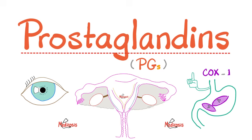In previous videos, I helped you learn about interleukins, cytokines, histamine, bradykinin, and today it's time for prostaglandins, which have important functions in different body organs and systems, including the eye, the uterus, and the stomach, and much more.